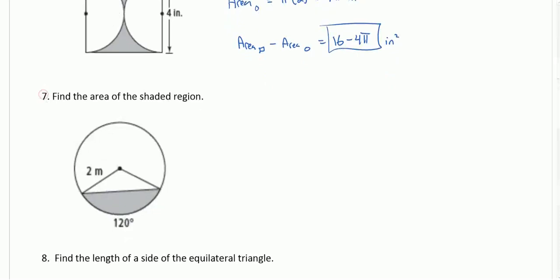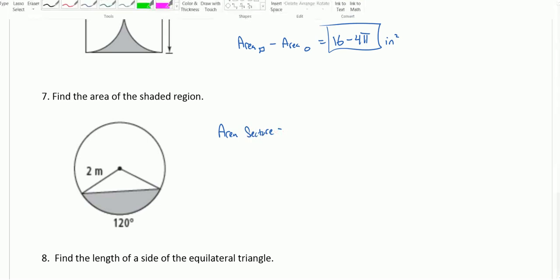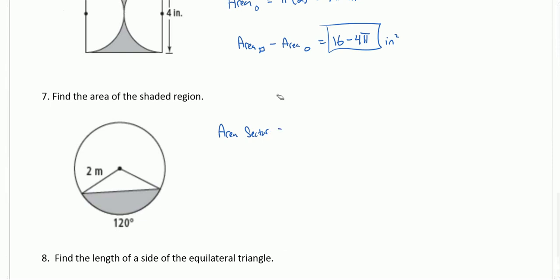Find the area of the shaded region here — it's the area of the sector. The area of the sector is 120 over 360, which is one-third of that circle, times pi r squared. That's one-third times 4 pi, or we could write four-thirds pi.